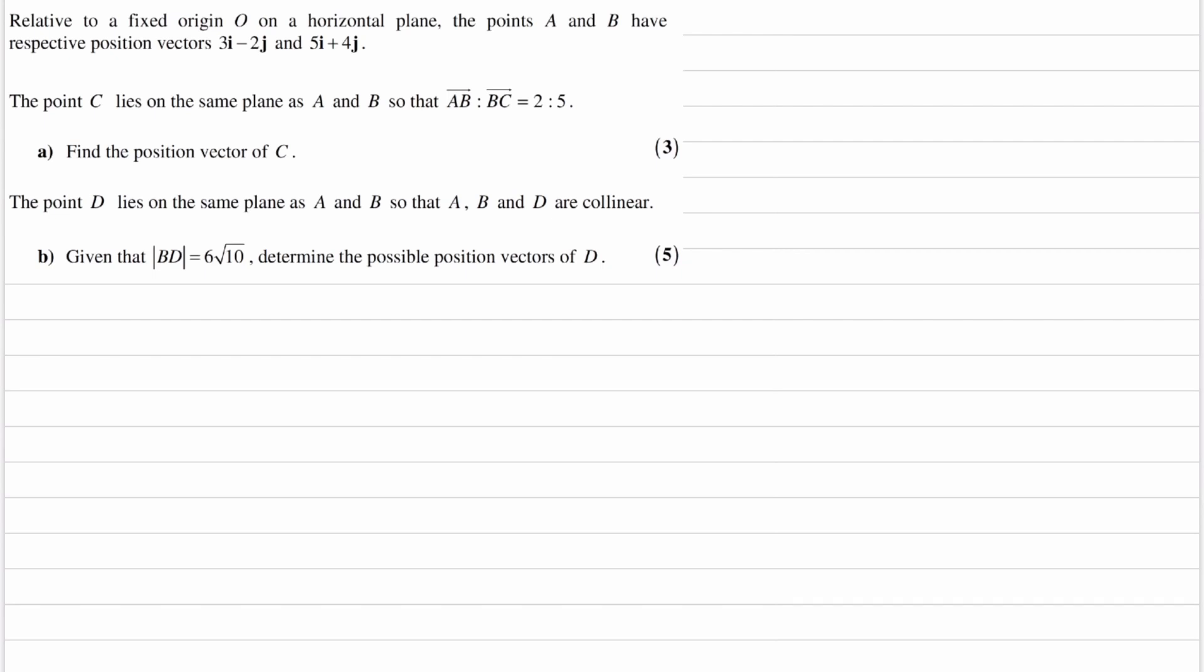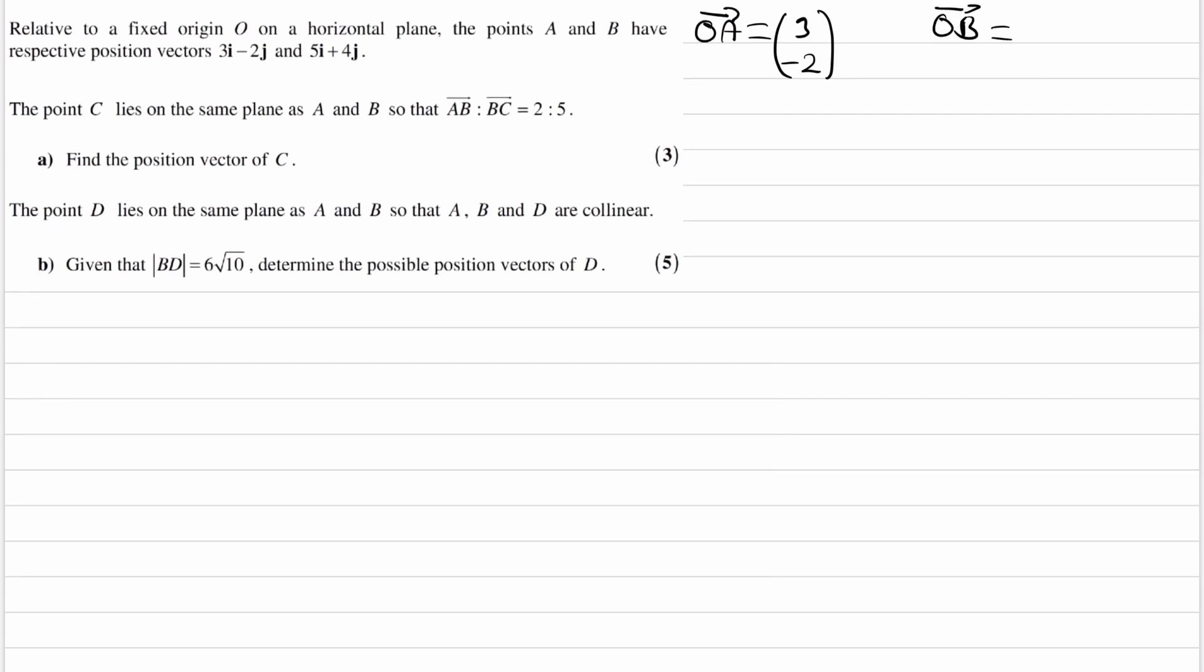We're given the position vectors of two points, A and B. OA is given as (3, -2), and OB is given as (5, 4).